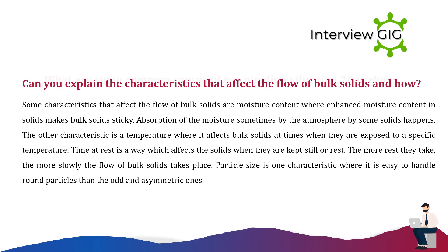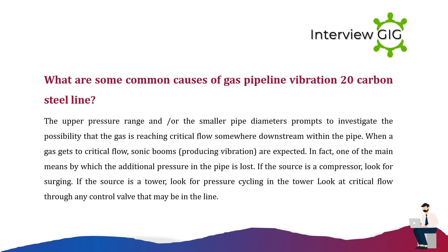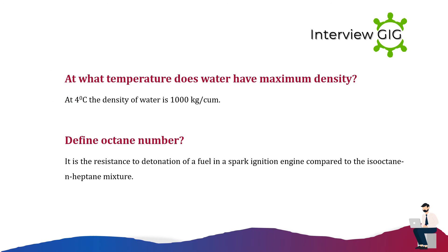What are some common causes of gas pipeline vibration? In a 20-carbon steel line, upper pressure ranges and/or smaller pipe diameters prompt investigation into whether the gas is reaching critical flow somewhere downstream. When a gas reaches critical flow, sonic booms producing vibration are expected — one of the main means by which additional pressure in the pipe is lost. If the source is a compressor, look for surging. If the source is a tower, look for pressure cycling. Also look at critical flow through any control valve in the line.